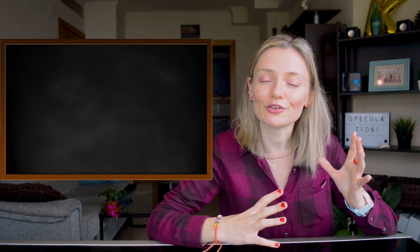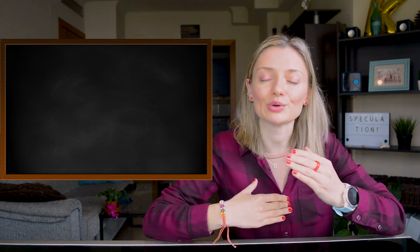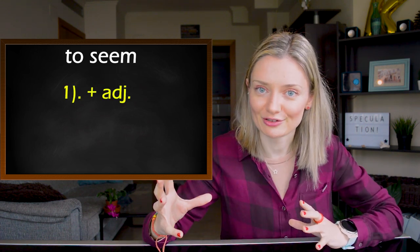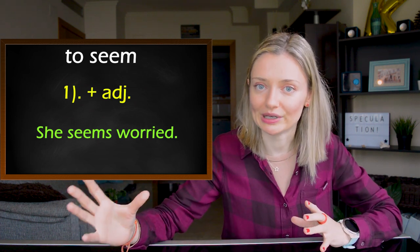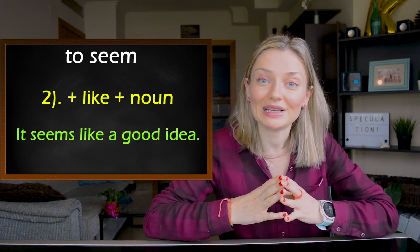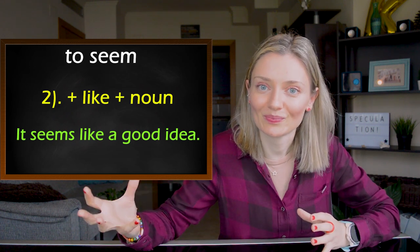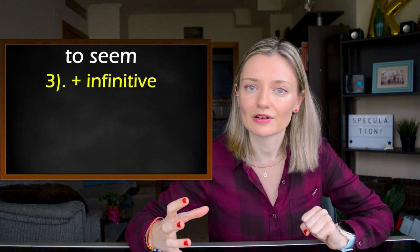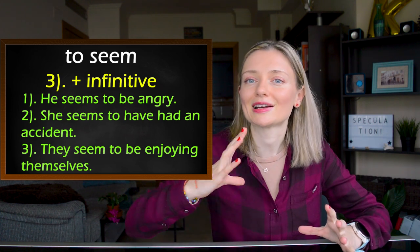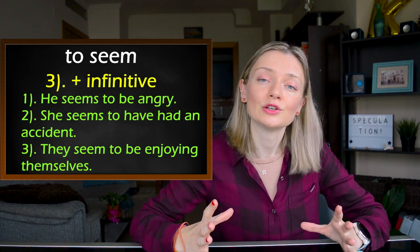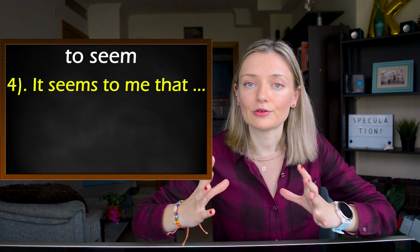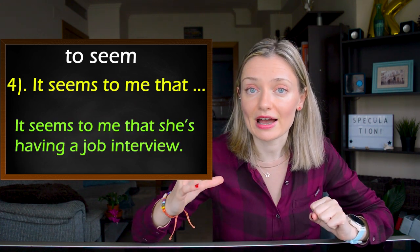Number four: another verb that could be used to speculate is 'to seem.' We could use an adjective after it — for example: 'She seems worried.' Or use a noun with 'like': 'It seems like a good idea.' Or use the infinitive: 'He seems to be angry,' 'She seems to have had an accident,' or 'They seem to be enjoying themselves.' We could also say: 'It seems to me that she's having a job interview.'